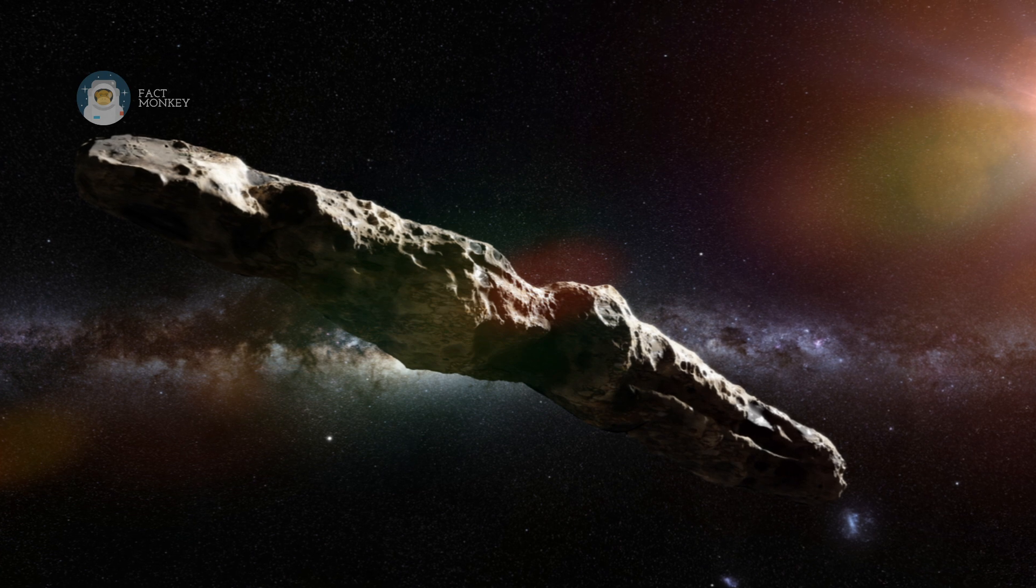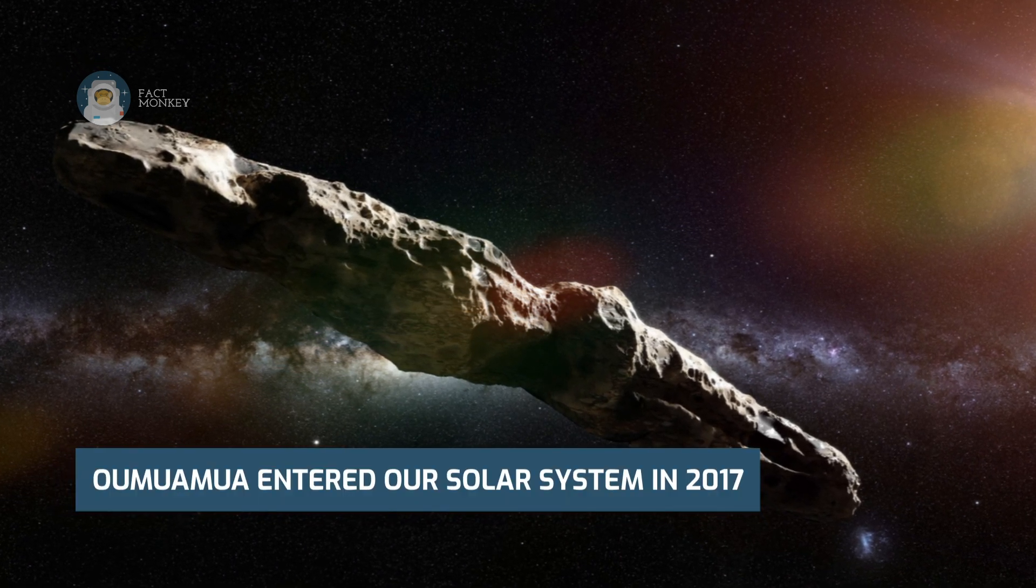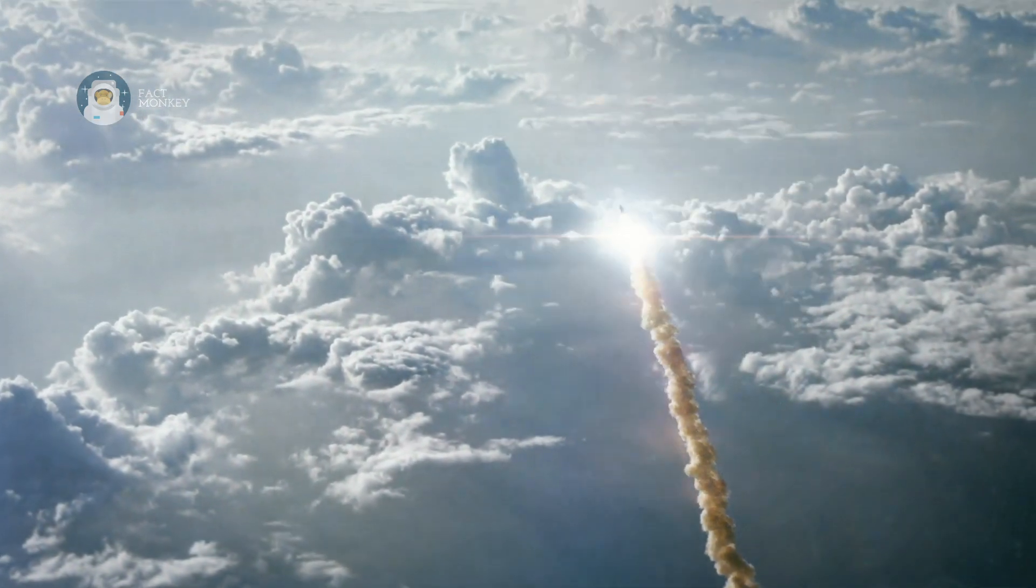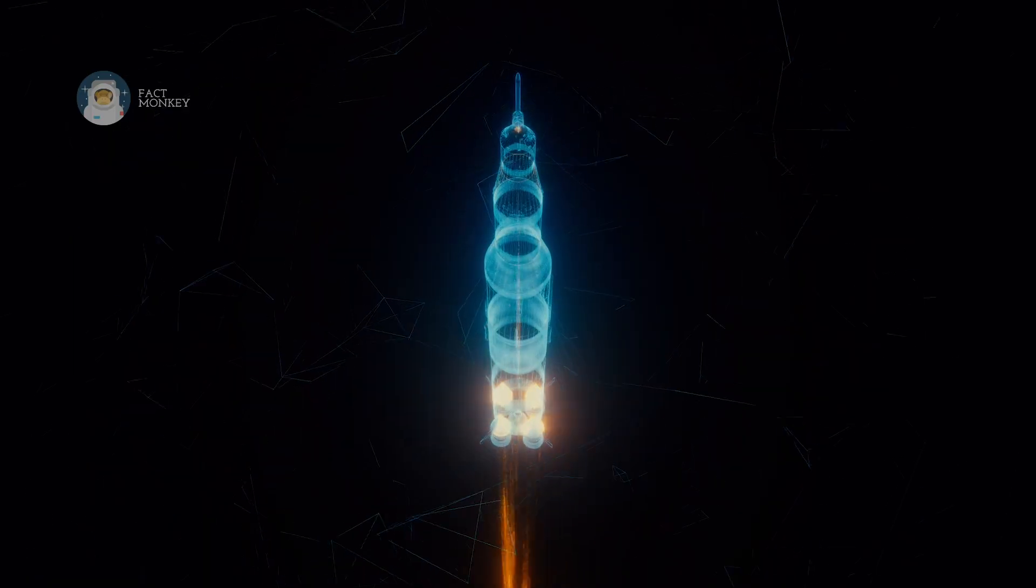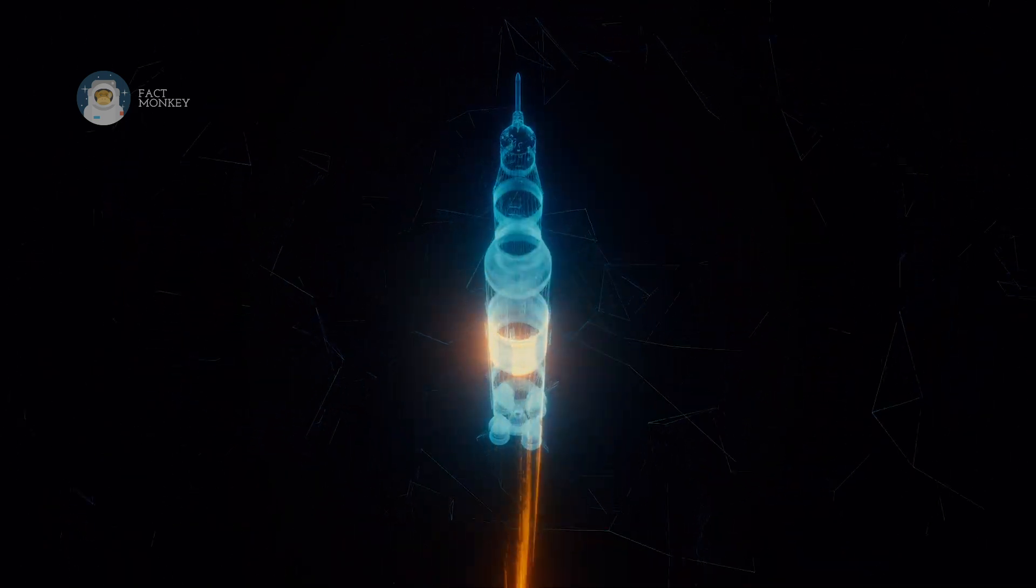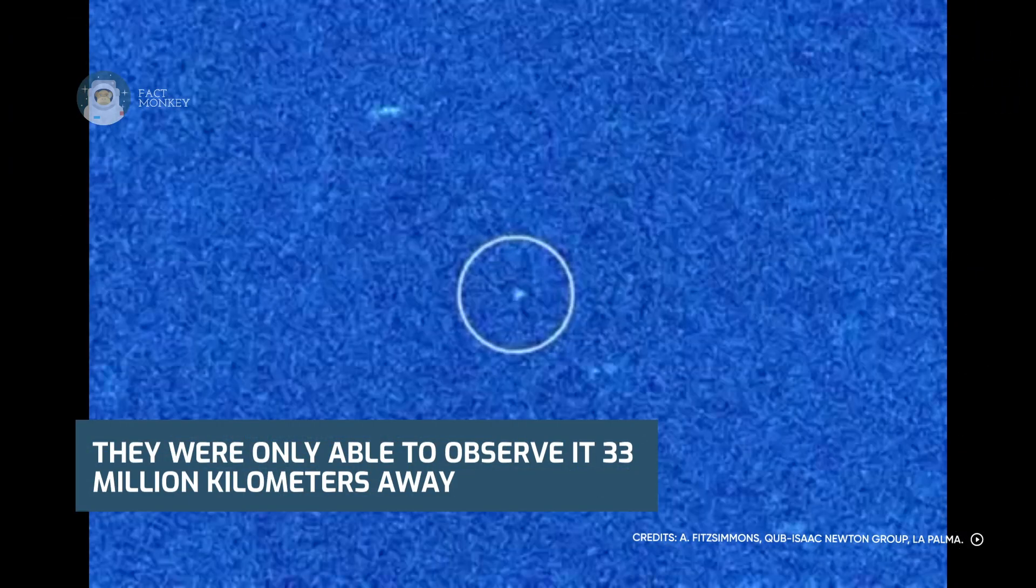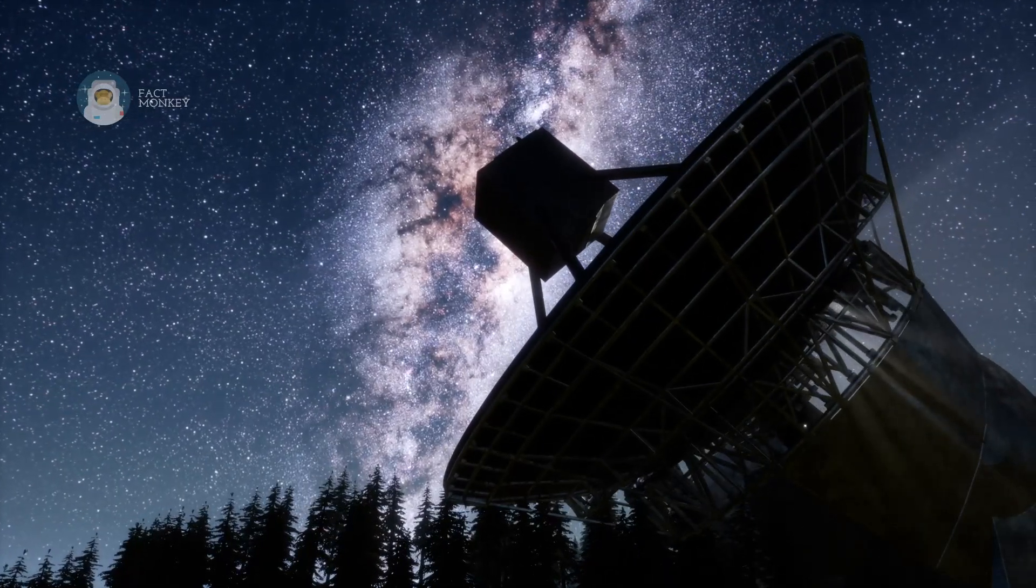The Oumuamua made its grand entrance into our solar system in 2017, and it's safe to compare it to a surprise guest showing up at a family dinner uninvited. Given the fact that it will take astronomers hundreds of years to reach it with conventional chemical rockets, they were only able to observe it 33 million kilometers away, or in other words, from Earth.